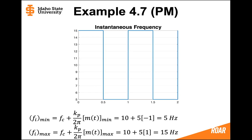Our instantaneous frequency graph goes from 15 Hz at the maximum to 5 Hz at the minimum. We can expect the modulated signal to have only two different frequencies, because the instantaneous frequency is either 15 Hz or 5 Hz.